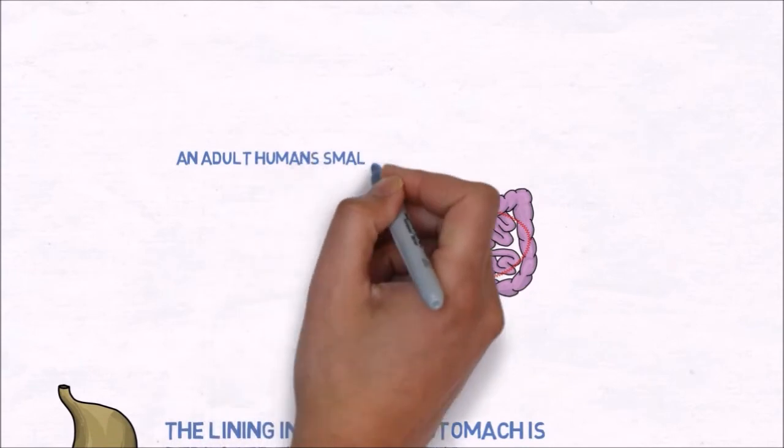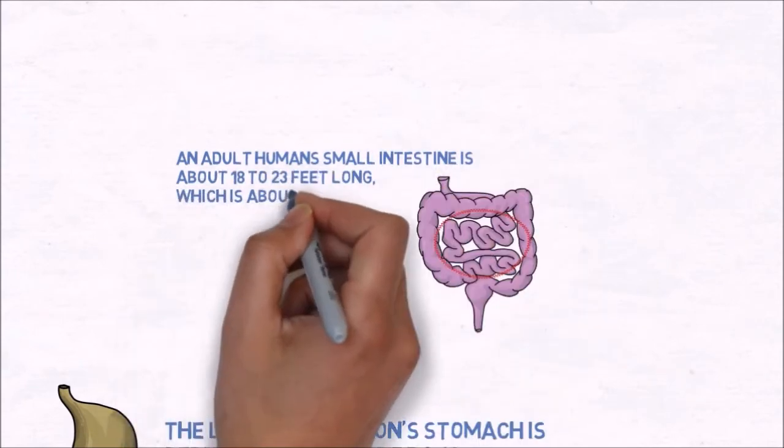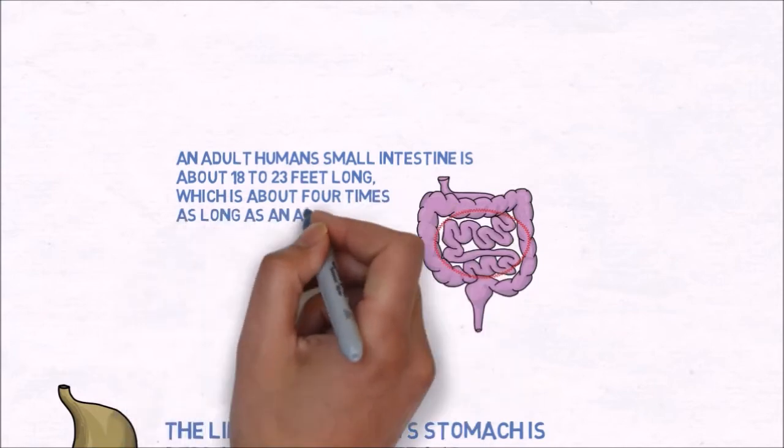An adult human's small intestine is about 18 to 23 feet long, which is about four times as long as an adult is tall.